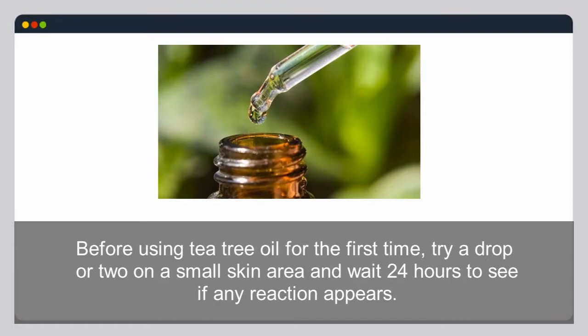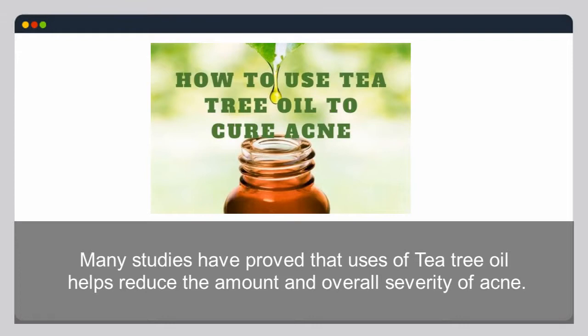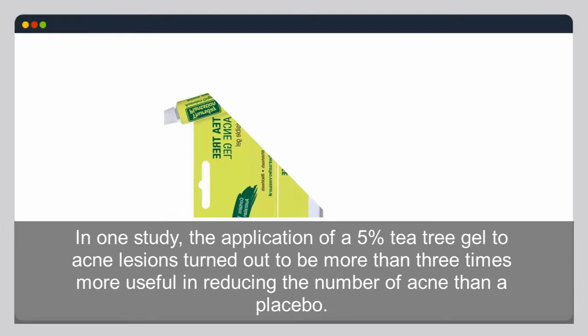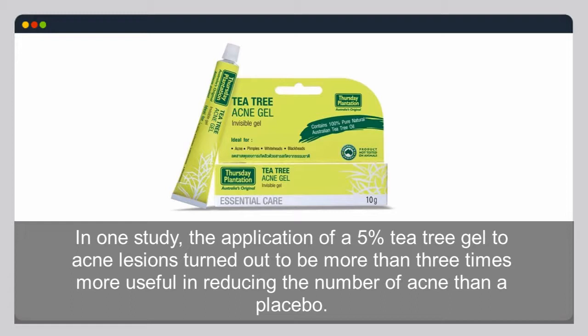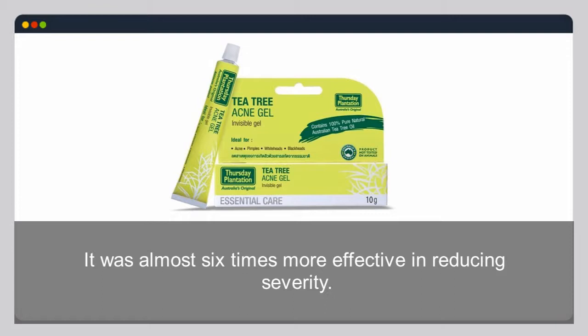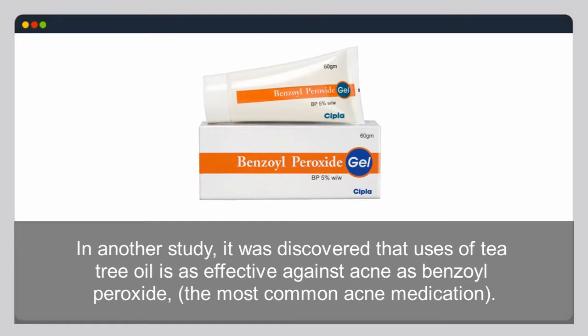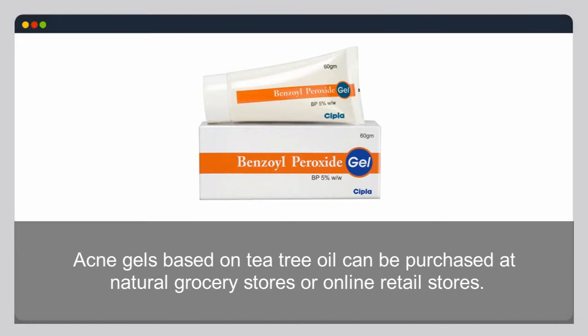Many studies have proved that tea tree oil helps reduce the amount and overall severity of acne. In one study, the application of a five percent tea tree gel to acne lesions was more than three times more useful in reducing the number of acne than a placebo, and almost six times more effective in reducing severity. In another study, tea tree oil was found to be as effective against acne as benzoyl peroxide, the most common acne medication.